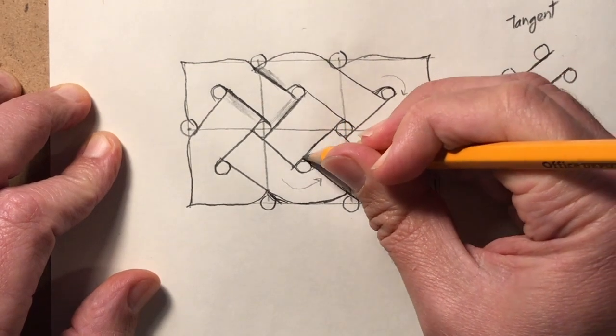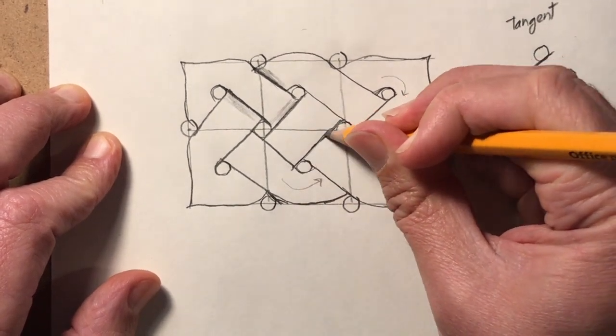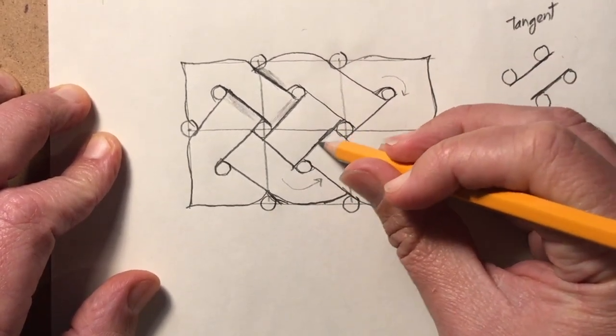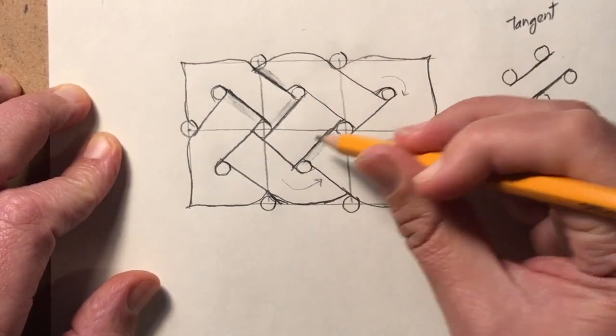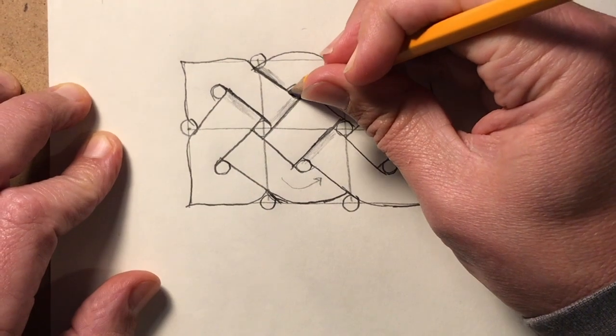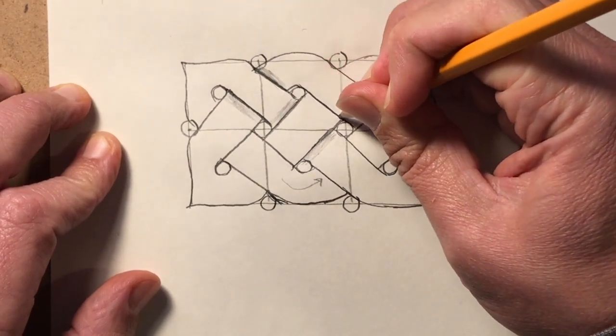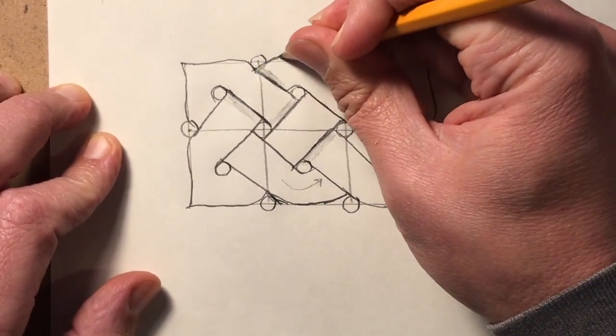Take this parallel line. Of course parallel in mathematics means or in general means the same slope. All right so let's take this one, just going to darken the line.